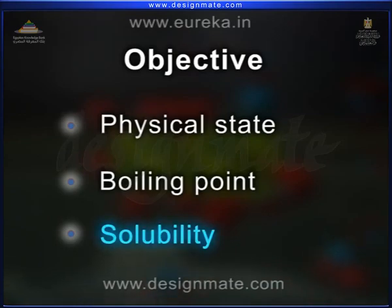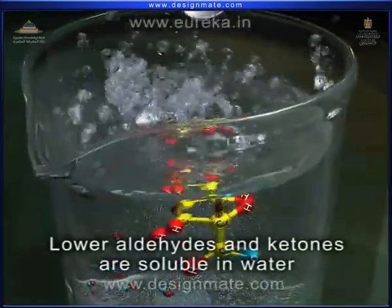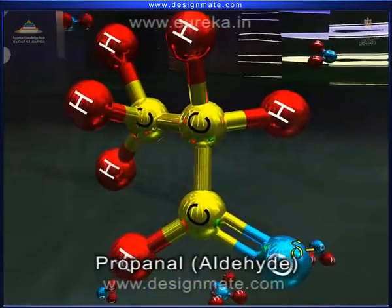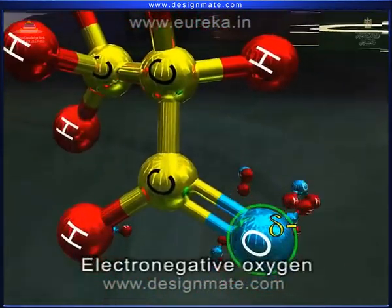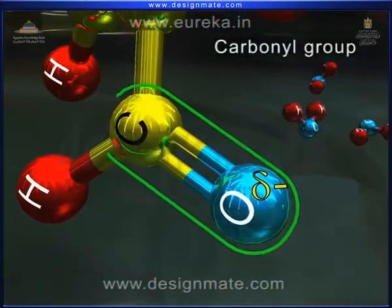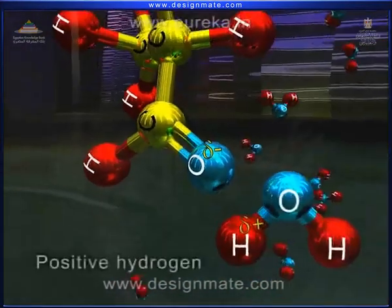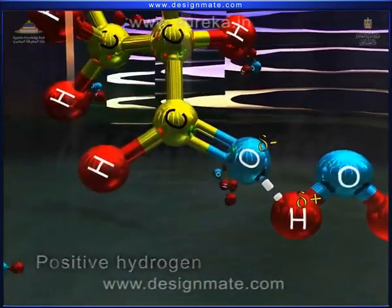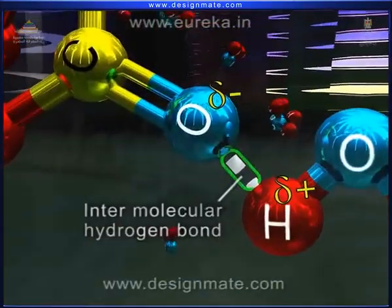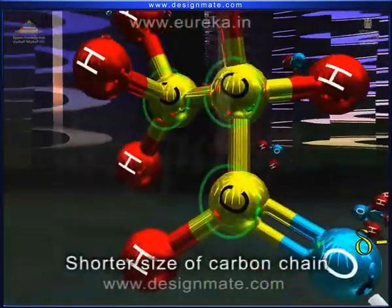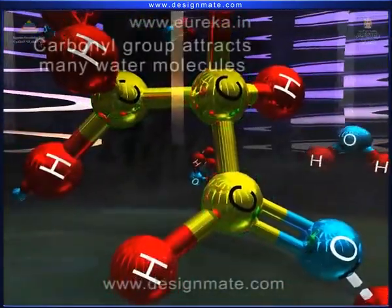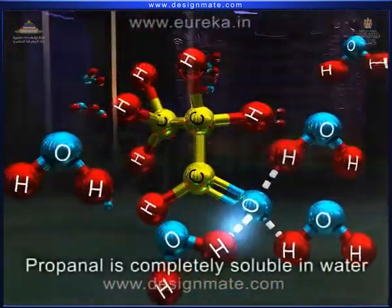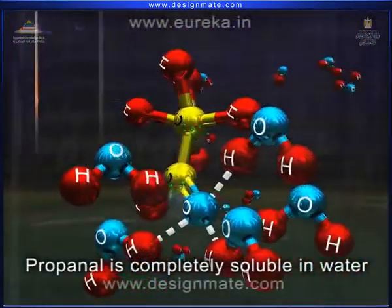Solubility. Lower aldehydes and ketones are soluble in water. For example, in a compound like propanone, the electronegative oxygen atom of the carbonyl group is attracted by the positively charged hydrogen atom of water molecules. This results in the formation of intermolecular hydrogen bonds. Due to the shorter size of the carbon chain, the carbonyl group of propanone attracts many water molecules. Hence, propanone is completely soluble in water.